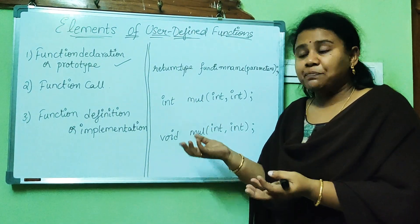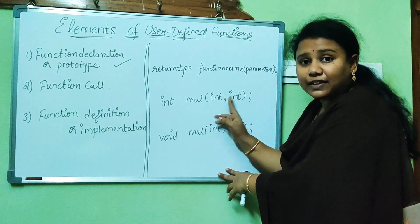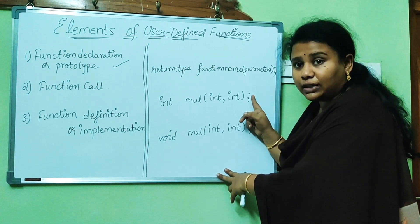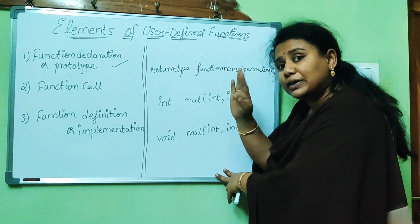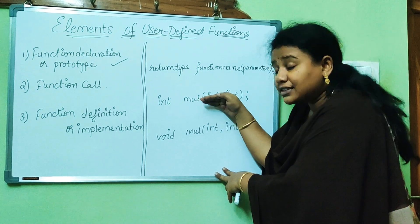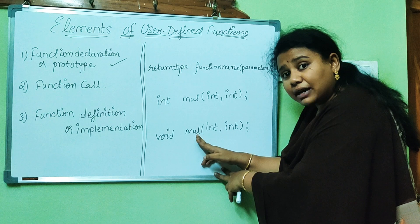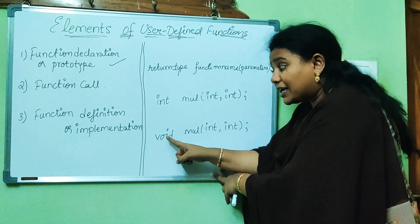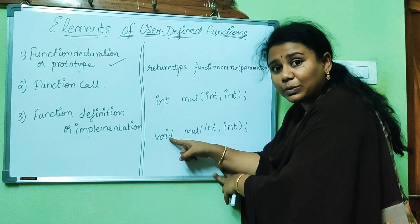See here — 'mul' is a function name, and the type of data that can be given is two integer values. That's why I am specifying them separated by a comma, and at the end you must give a semicolon. After the execution of this entire function, the data returned back must be of type integer. Now I am writing the same function prototype in another manner. Again this is the mul function, giving two integer values as input, but getting nothing as output — void means nothing.